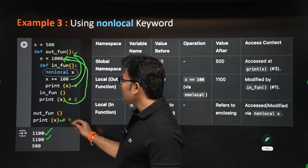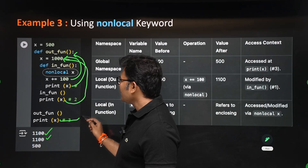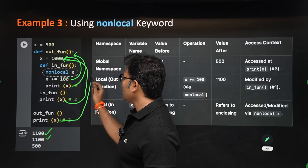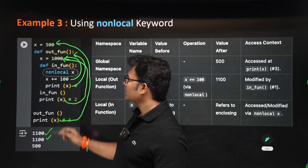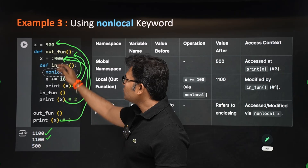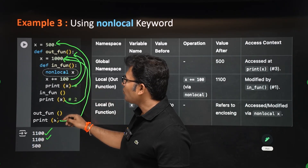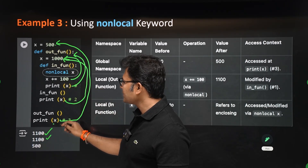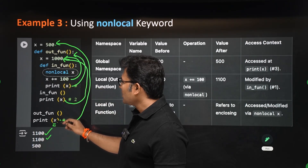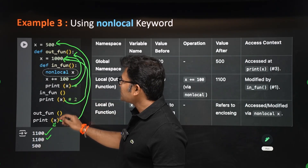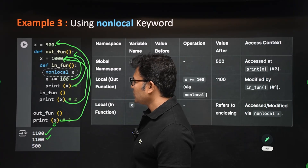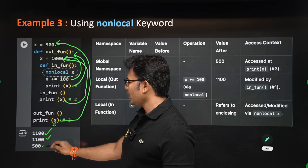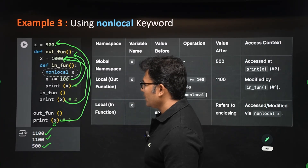When you print x outside all functions, it refers to the global x, which is 500, so 500 is printed. This is because the enclosing-scope x is local to the outer function's scope, not the global scope.